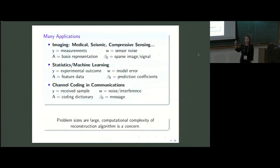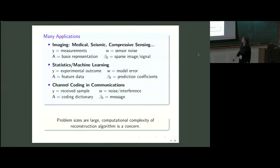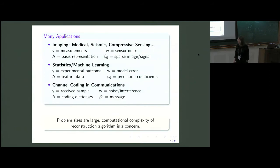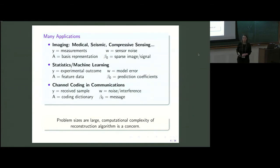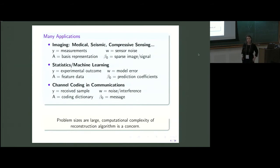There are numerous applications for high-dimensional linear regression. These problems appear in imaging, in statistics and machine learning where A is a data matrix and beta is a vector of coefficients, and in channel coding and communication. I'm abstracting away from specific applications, but I'm thinking about problems where the sizes are large — so computational complexity of the reconstruction algorithm is something we concern ourselves with.